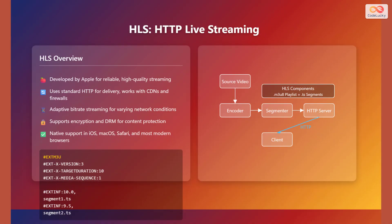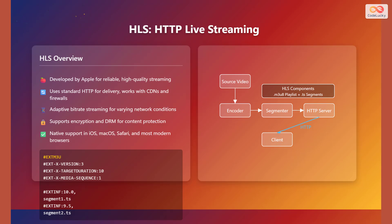Now let's discuss HTTP Live Streaming, or HLS. HLS was developed by Apple and is known for its reliability and high-quality streaming. It uses standard HTTP for delivery, making it compatible with content delivery networks and firewalls. HLS supports adaptive bitrate streaming, which allows it to adjust to varying network conditions. It also supports encryption and digital rights management for content protection. HLS has native support in iOS, macOS, Safari, and most modern browsers, making it a versatile choice.